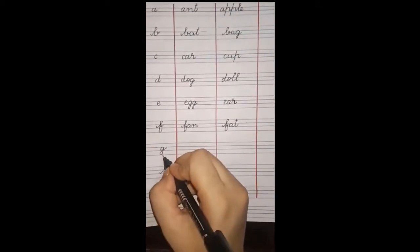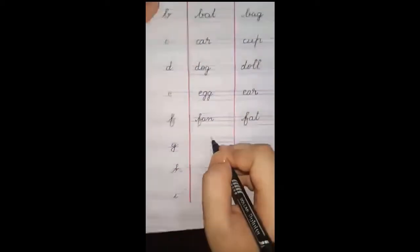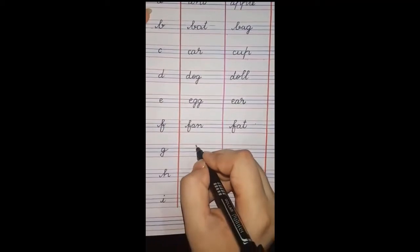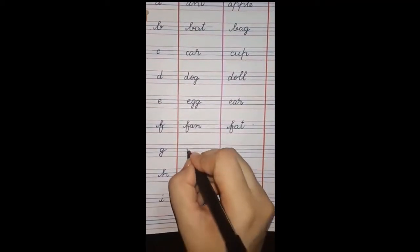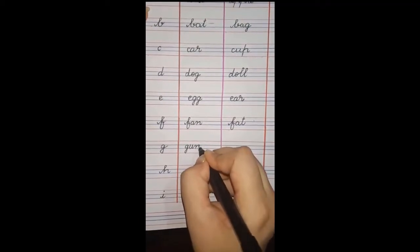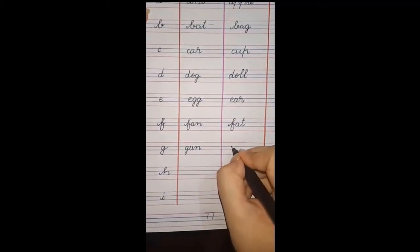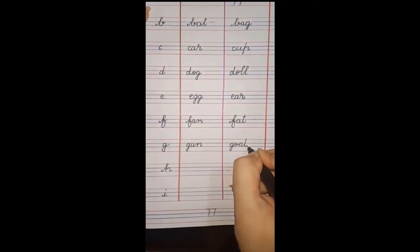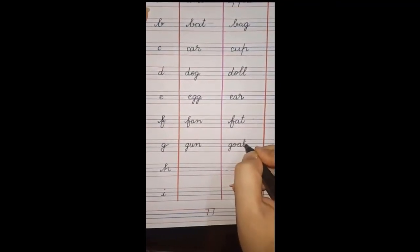Okay, next hai letter hamara G. G se hamne two friends make karen na. G - goat, G - gate. Hum write karenge gun. G - gun aur goat. G - goat. Goat kya hoti hai? Bakri ko kehte hain.